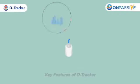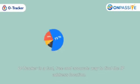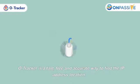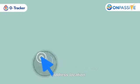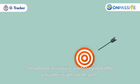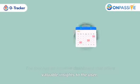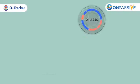Key features of O-Tracker. O-Tracker is a fast, free, and accurate way to find the IP address location. The tool has an intuitive dashboard that offers valuable insights to the user.